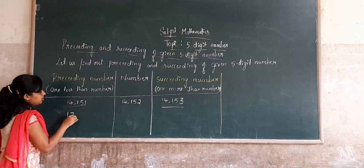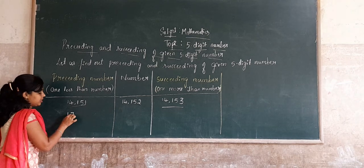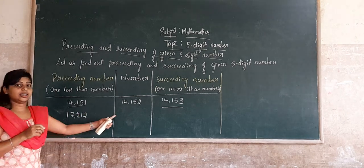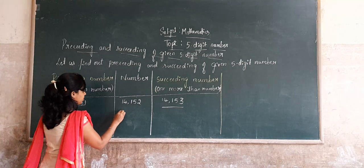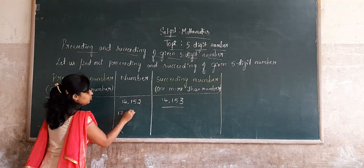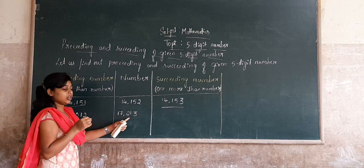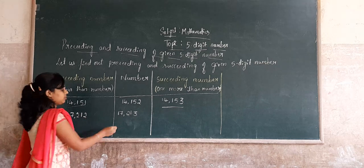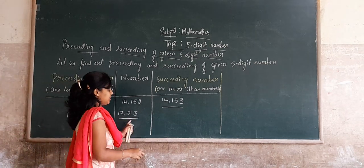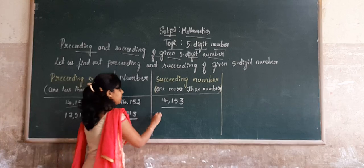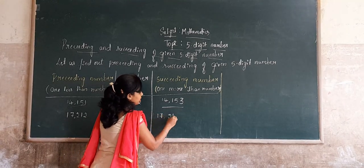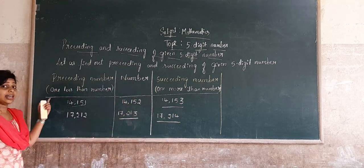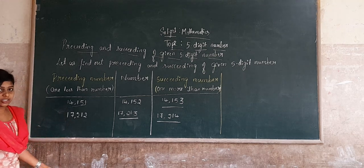Here the given number is 17,212. We write the given number. For the preceding number, we subtract 1 and get 17,211. For the succeeding number, we add 1 and get 17,213. The preceding and succeeding numbers are found by subtracting or adding 1 to the given number. This is the rule.